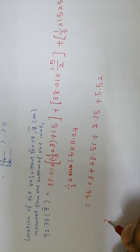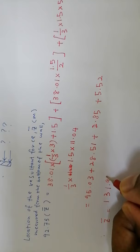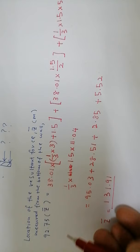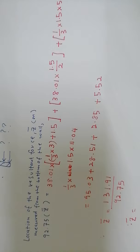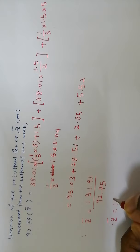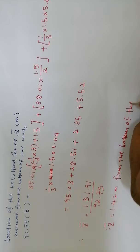Therefore, the location y̅ is the summation of all of these: 95.03 plus 28.51 plus 2.85 plus 5.52, which equals 131.91. Divide by the resultant force, which is 92.75. Therefore, the location of your resultant force is 1.42 meters from the bottom of the wall.